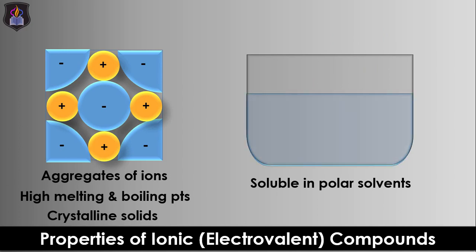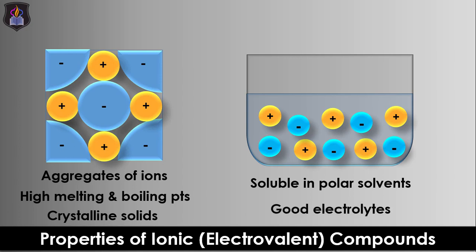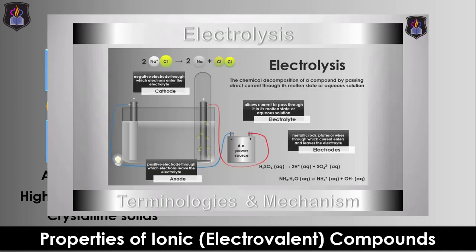Also, when they are heated or dissolved in water, they dissociate into freely moving ions, which makes them suitable for conducting electricity in their molten states or aqueous solutions. Hence, ionic compounds are said to be good electrolytes. You have to watch our tutorial videos on electrolysis via the link in the description to see how ionic compounds conduct electricity with the help of mobile ions.